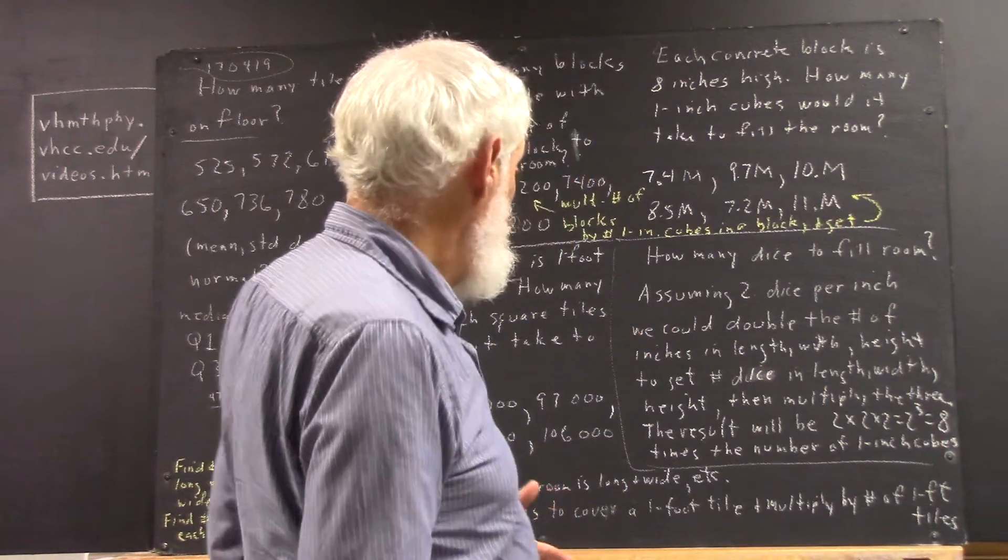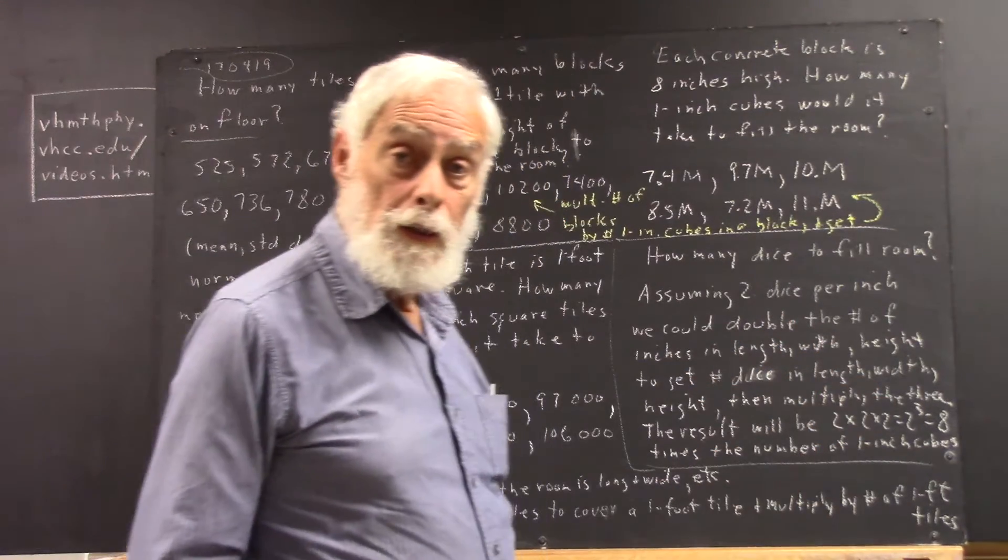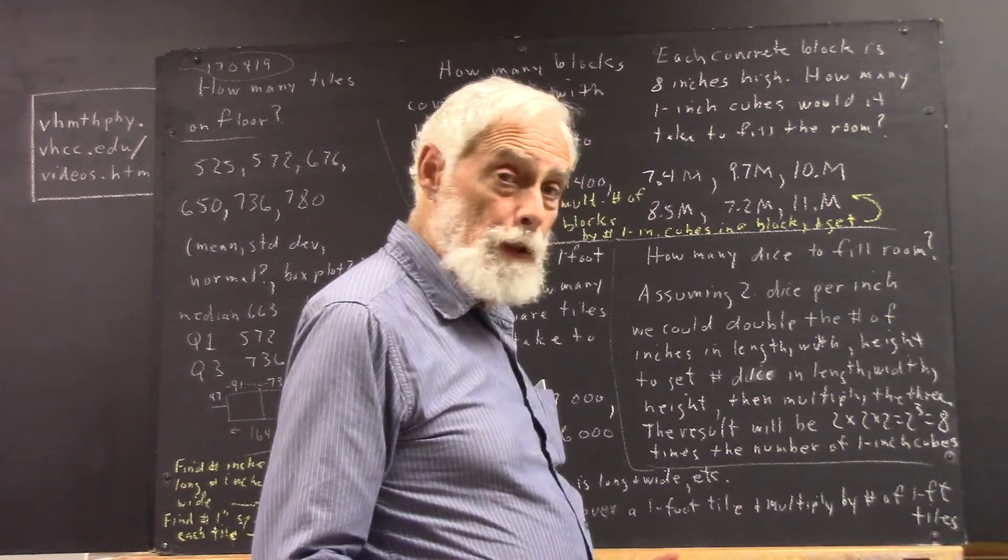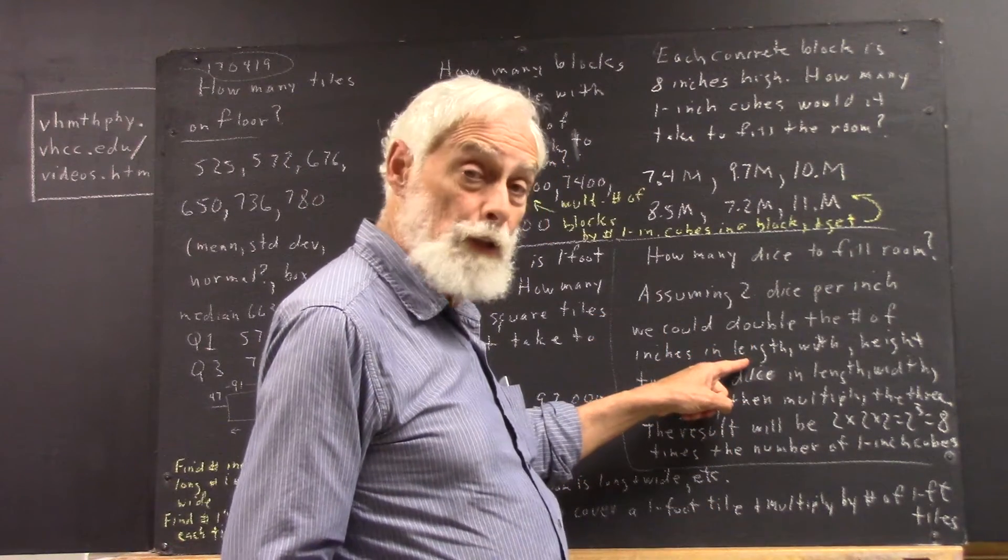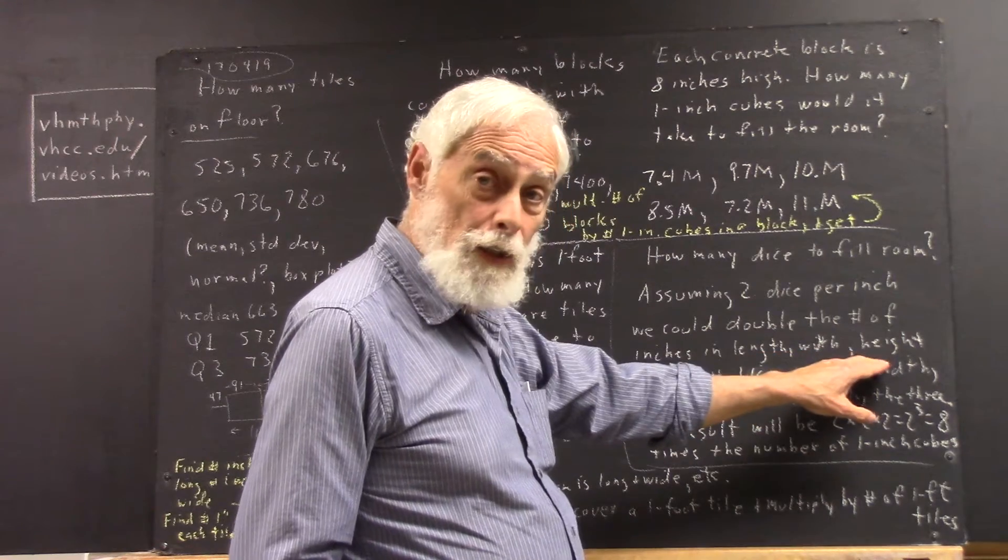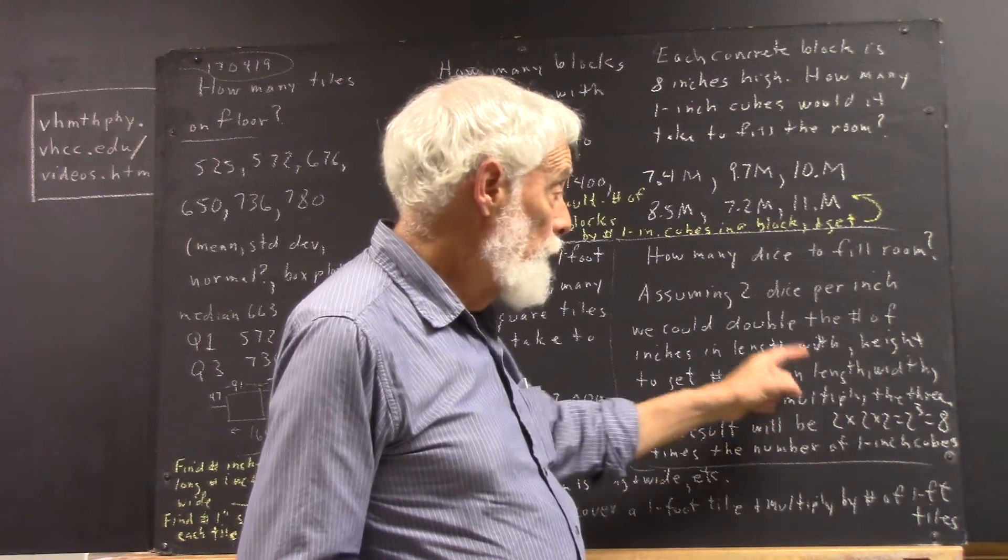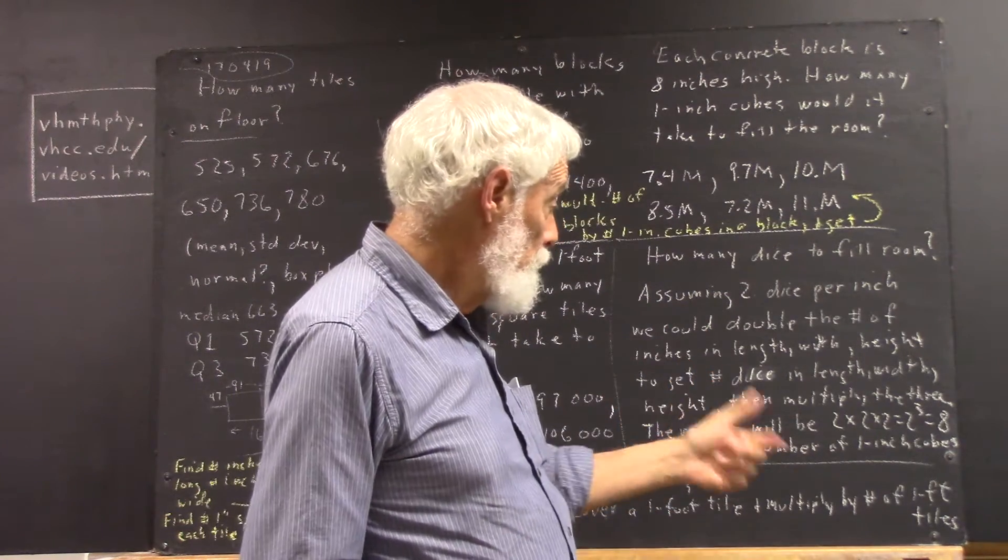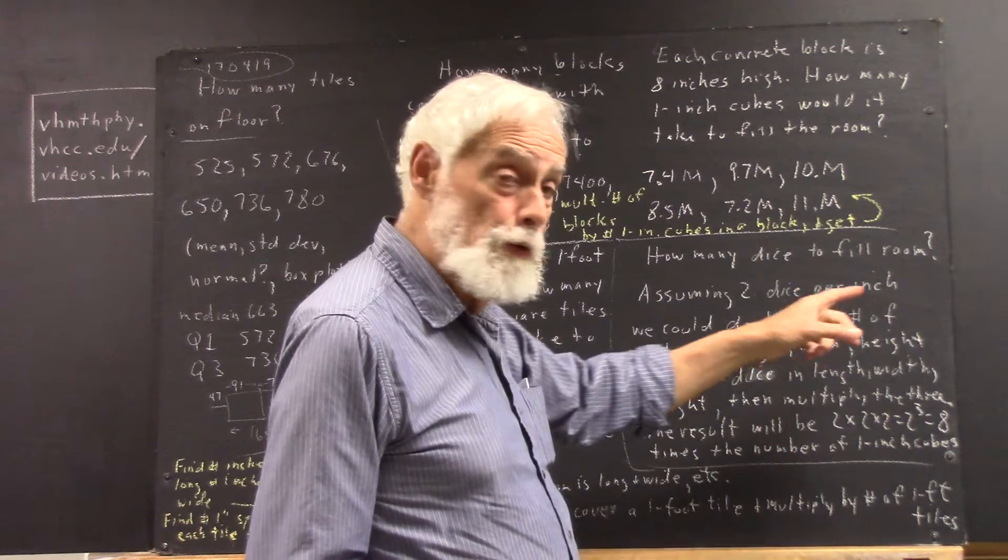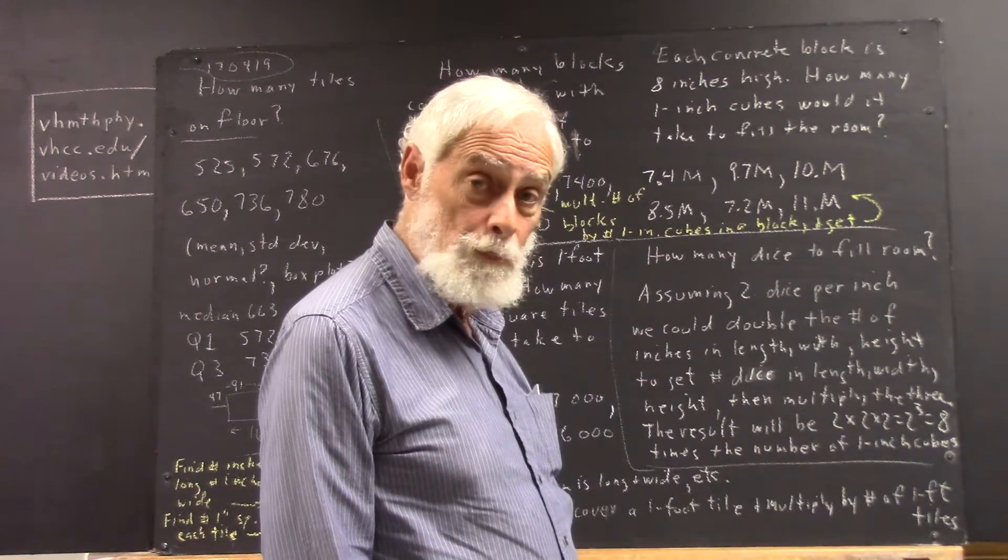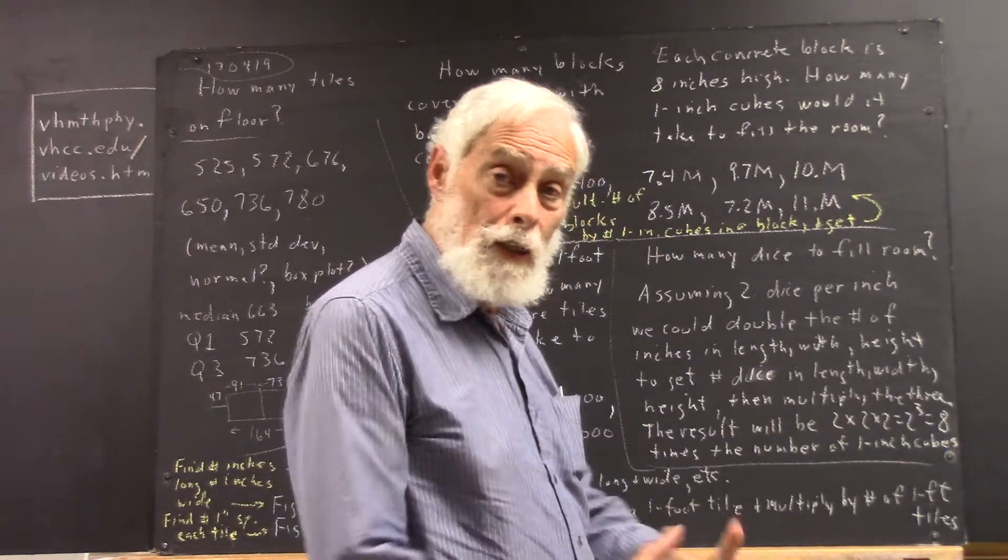Well, in doing that, we will have multiplied by two to get the length, by two to get the width, and by two to get the height. So when you multiply length by width by height, we'll have multiplied by two for each one. So we're going to multiply by two by two and by two, and what we get then would be two times two times two, or two cubed, times as many dice as you have one-inch cubes.